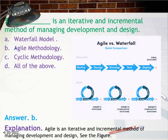Question 5: Which is an iterative and incremental method of managing development and design? A. Waterfall model, B. Agile methodology, C. Cyclic methodology, D. All of the above. Answer: B. Agile methodology. Explanation: Agile is an iterative and incremental method of managing development and design.